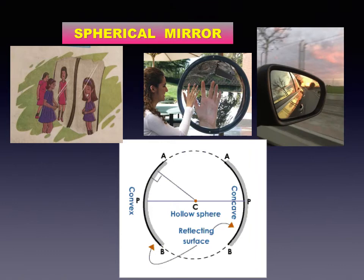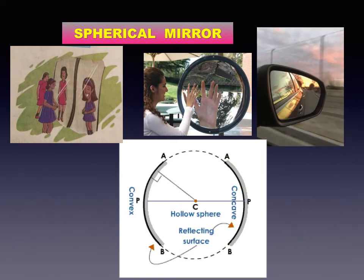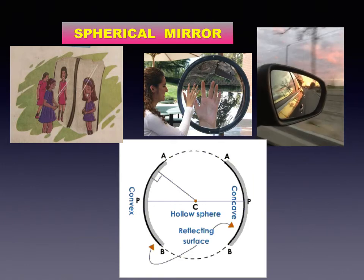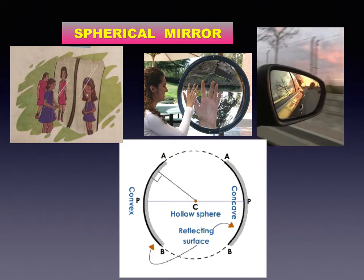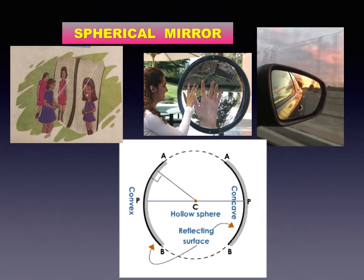If we cut a rubber ball into two parts, we can see that each part has two types of surfaces. Spherical mirrors are part of a hollow glass sphere. The inner or outer surface of this part is coated with a shiny substance to produce a spherical mirror. Reflection of light takes place from either its outer or inner surface.